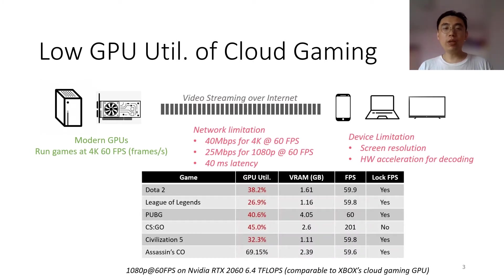Due to these limitations, most cloud gaming players can only stream games at 1080p 60fps or even lower. We find that streaming cloud games at this quality leads to low utilization for powerful cloud GPUs. In this list of popular games, the GPU utilization of most of them is lower than 50% when running on a server with a similar configuration of cloud gaming servers.